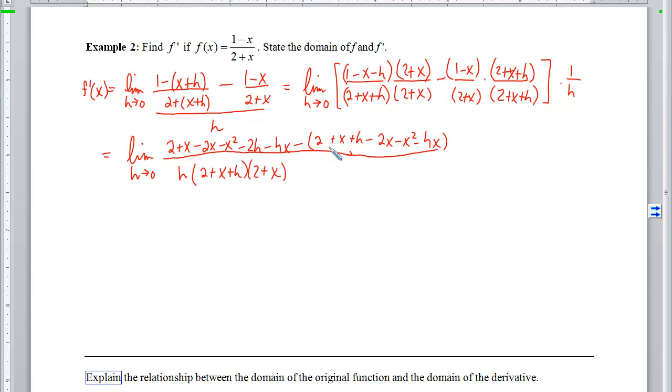If we've done this properly, then everything that doesn't have an h in it should disappear from the top. The 2 cancels with the 2, x cancels with the x, 2x cancels with the 2x, the x² cancels with the x², and we even get rid of our hx. If we look at what's left now, on top we'll have -2h - h, so I get -3h over h(2 + x + h)(2 + x). Now h will cancel, and now I no longer have a problem with h = 0. So I plug h = 0 in, and I'll get -3/(2 + x)².